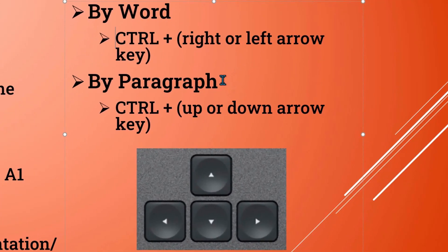Now look at quick navigation with the keyboard. Control plus a left or right arrow key will move us one word at a time left or right. The control plus the up or down arrow key will move us up or down by paragraph.